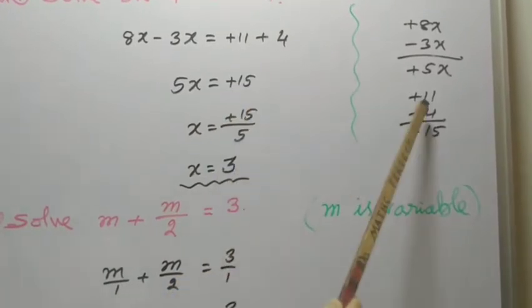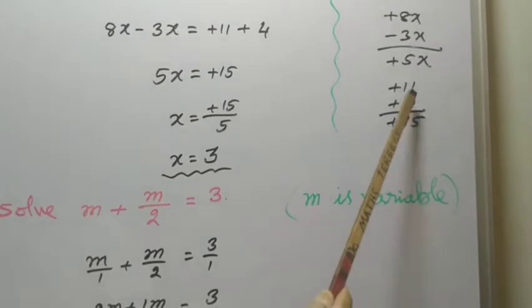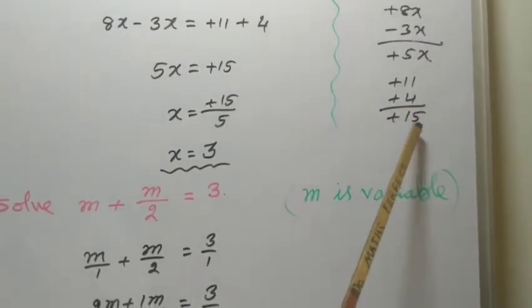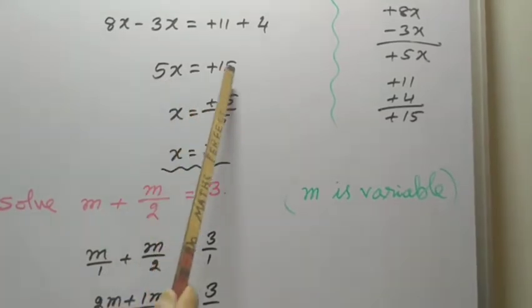And right-hand side, both are having the same sign. So we have to add them. So 11 plus 4 is 15, plus 15. Now, 5X equal to 15.